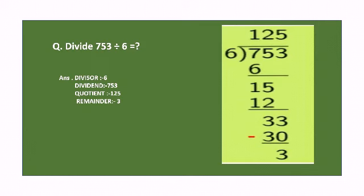Now the next question: divide 753 by 6. First take 7, since 7 is greater than 6. There is one 6 in 7, so 6 ones are 6. Subtract: 7 minus 6 equals 1. Bring down 5 to get 15.